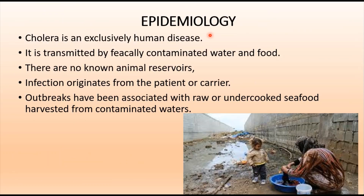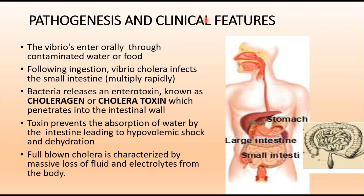Regarding epidemiology, cholera is exclusively a human disease — there are no known animal reservoirs. It is mainly transmitted by contaminated water and food via fecal matter. Infection originates from patients or carriers, and outbreaks have been associated mainly with raw or uncooked seafood harvested from contaminated waters.